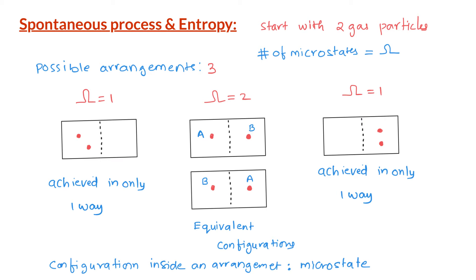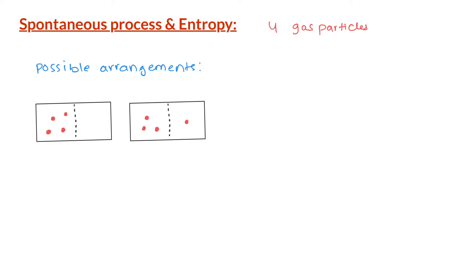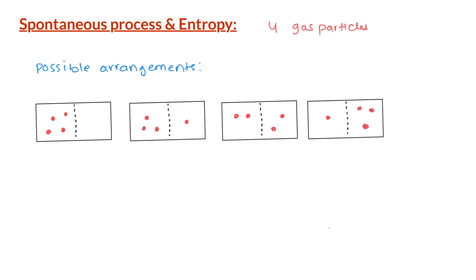Let us now assume the container has four gas molecules. We remove the partition and the gas particles move randomly across the entire container. If we take a snapshot, there are five different arrangements possible: all four on the left; three on the left and one on the right; two on each side; one on the left and three on the right; or all four on the right hand side.